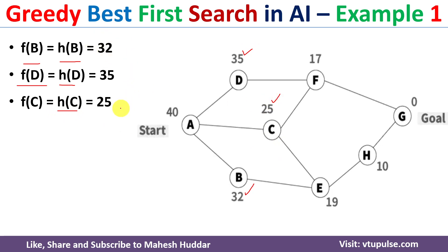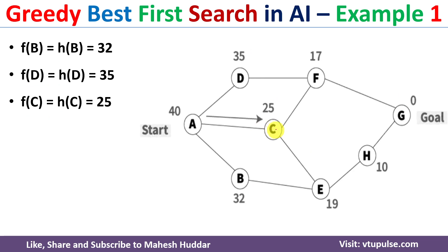Once we calculate all three values, we select one among them. f(C) has the minimum value, so we select node C because it is more closer to the goal node. From C, we need to find the path to reach the goal node. From C, there are two possible actions: C to F and C to E.